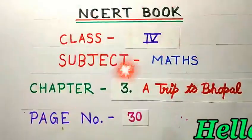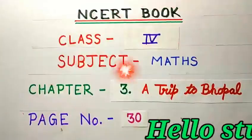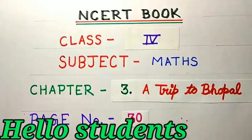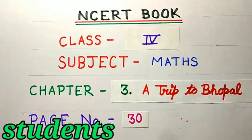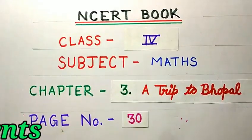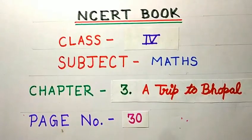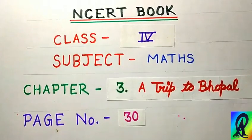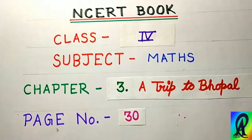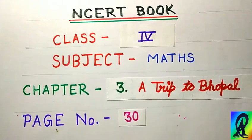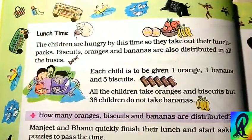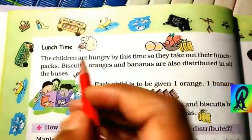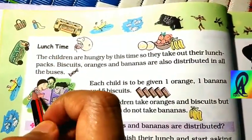Hello students, I hope all of you are fine. Today we are going to learn about our NCERT book, Class 4, subject Math, Chapter 3: A Trip to Bhopal, page number 30. If you have not seen the previous video of this chapter, go to the description and follow the link. This is page number 30 of your book and the topic is Lunch Time.